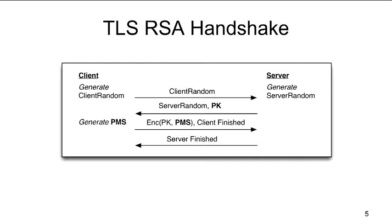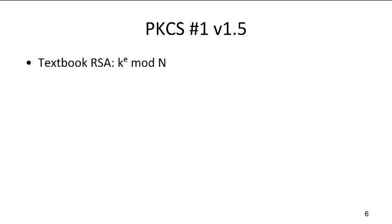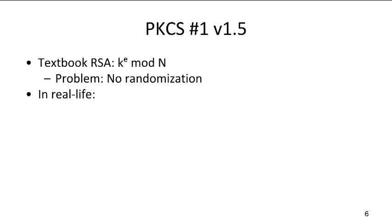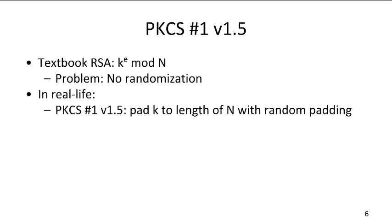Let's focus on the RSA ciphertext. When they taught me RSA in undergrad, they said if you want to encrypt value k, you compute k to the power e modulo n, where n is the public modulus. That's not how RSA works in practice. In particular, ciphertexts are deterministic — if you encrypt the same value twice, you get the same ciphertext twice. In real life, this is solved by a standard called PKCS#1 version 1.5, where we pad the data with randomized padding to the length of the modulus. This is the standard.